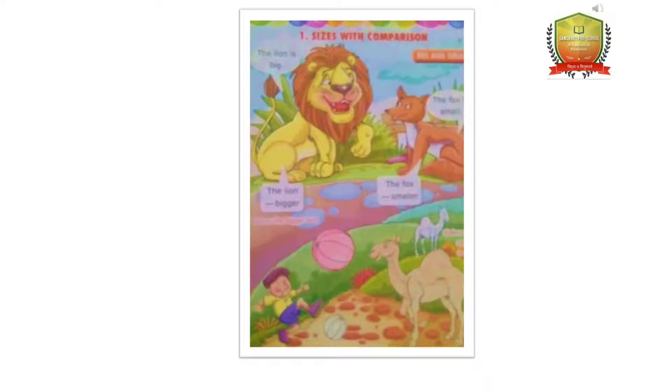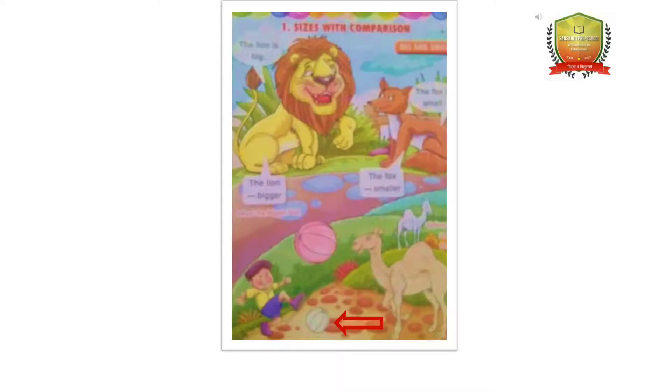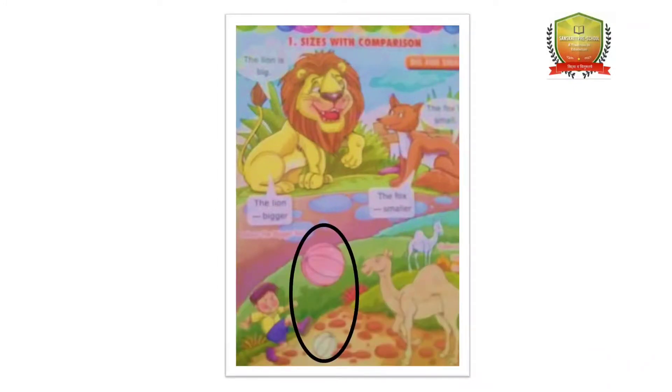In this picture, you will see two balls. One is pink, and the other one is white. The pink ball is big, and the white ball is small. Pink ball is bigger than the white ball, and the white ball is smaller than the pink ball.